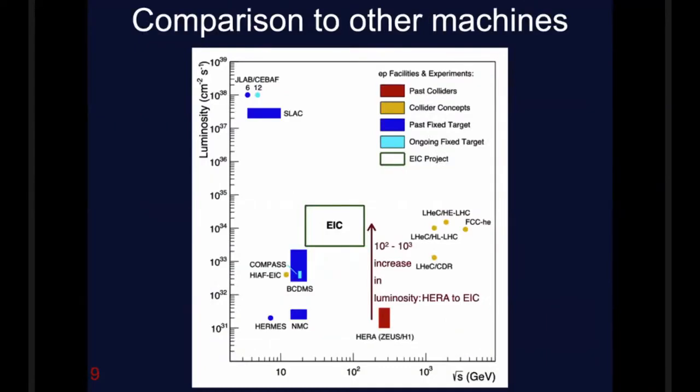I now want to compare the EIC to other machines, both existent and proposed. You see the EIC has a very high luminosity. Although it has a somewhat lower beam energy than HERA, it has a very wide range. The product of energy and luminosity is very large for the EIC, by a factor of 500 above HERA which is very helpful.